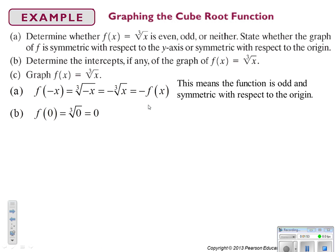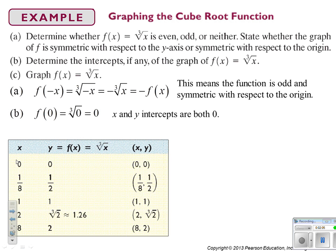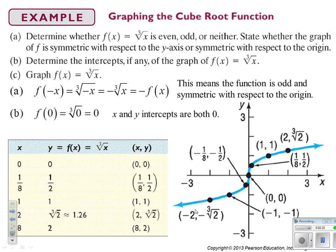When we plug in 0 for intercepts, we get 0 out, so the x and y intercepts are both 0. Plotting some points: plugging in 0 gives 0; 1/8 gives 1/2; 1 gives 1; 2 gives about 1.26 (the cubed root of 2); and 8 gives 2. The graph looks like a cubic on its side — like a sideways swimmer.